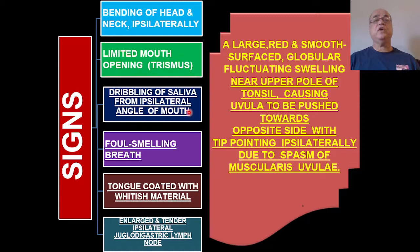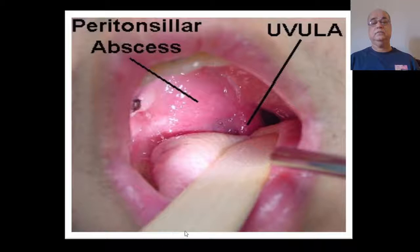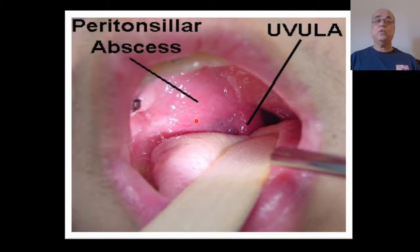There is dribbling of saliva from the ipsilateral angle of the mouth due to odynophagia, foul-smelling breath, and the tongue may be coated with whitish material due to dehydration. There are enlarged and tender ipsilateral jugulodigastric lymph nodes. On examination, a large, red, smooth-surfaced, globular, fluctuating swelling is seen near the upper pole of the tonsil, causing the uvula to be pushed toward the opposite side, while the tip of the uvula will be pointing toward the same side due to spasm of the musculus uvulae.